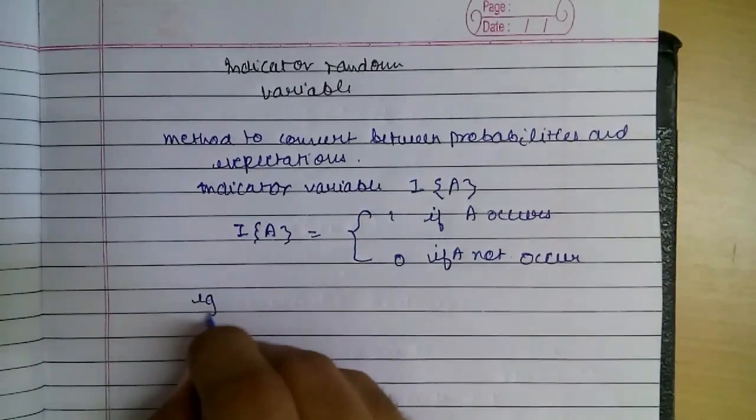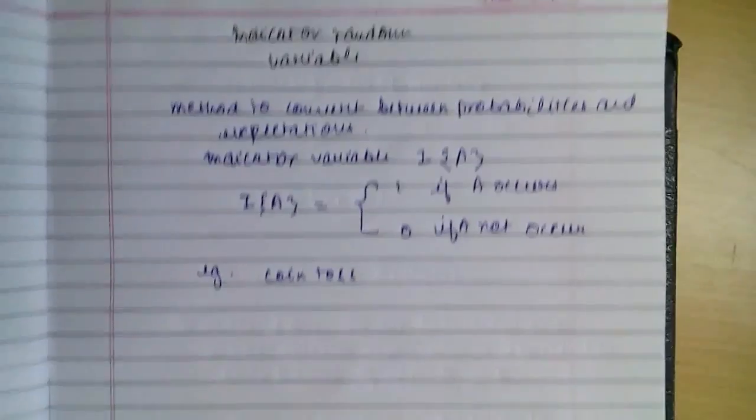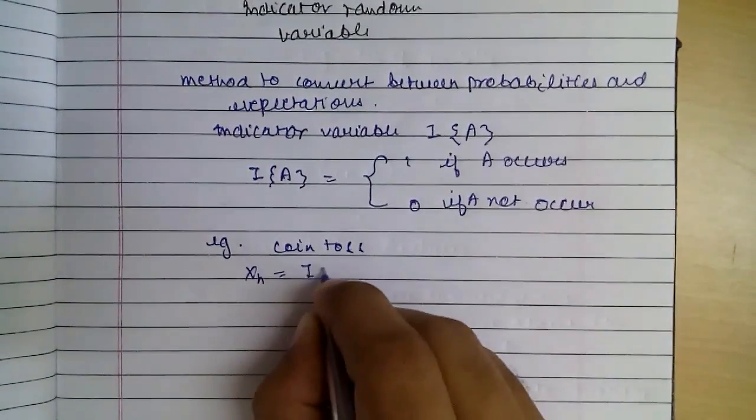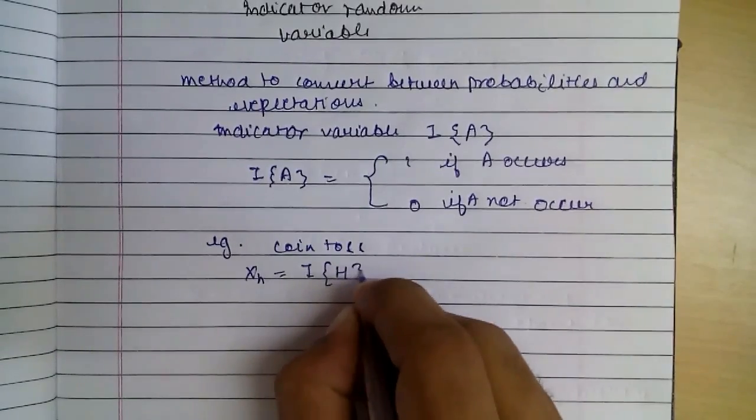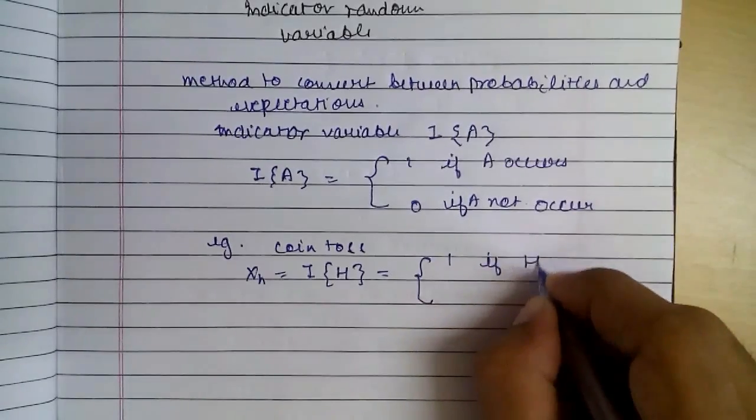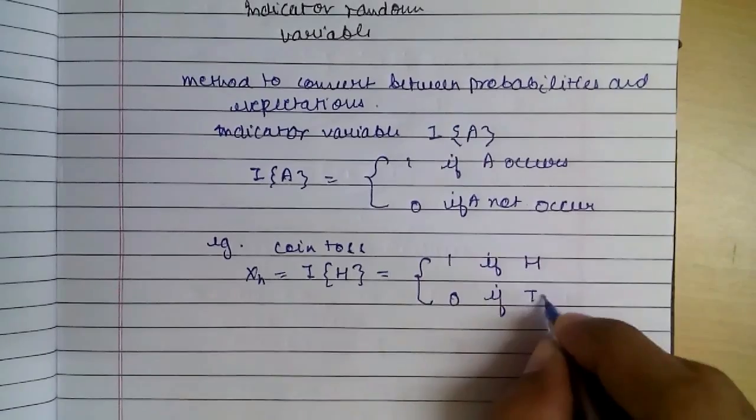For example, like in coin toss, X of H let be the Indicator of Head. So it will be 1 if Head is there and 0 if Tails.